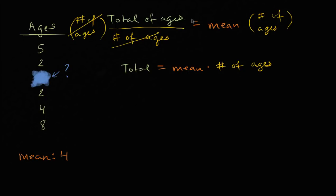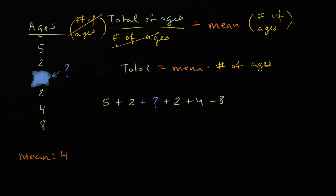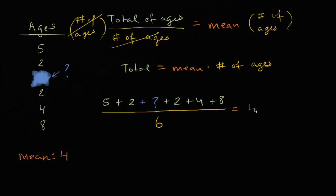Let's go back to the beginning with some numbers. The total of ages is going to be five plus two plus question mark plus two plus four plus eight. We divide that by the number of ages — we have six ages here — and that's going to be equal to the mean. The mean here is four. This is just how you calculate the mean.